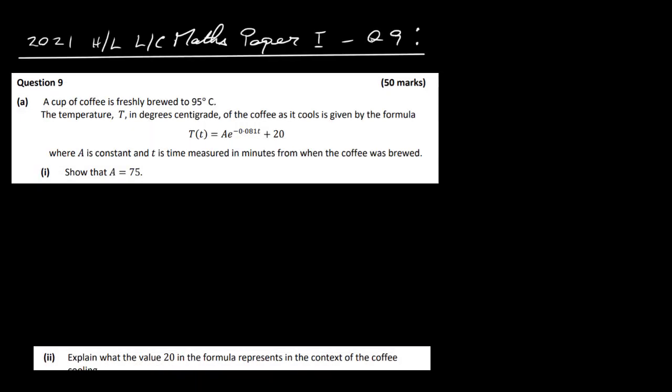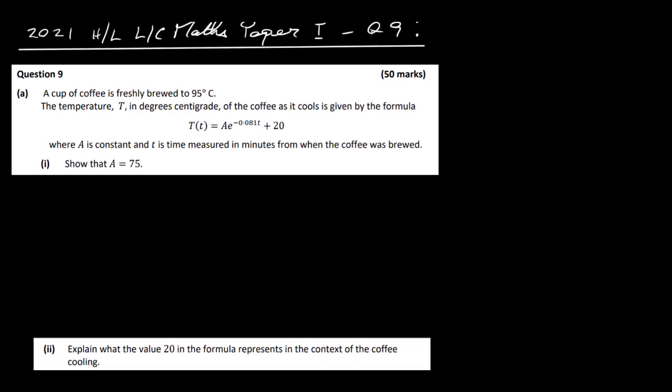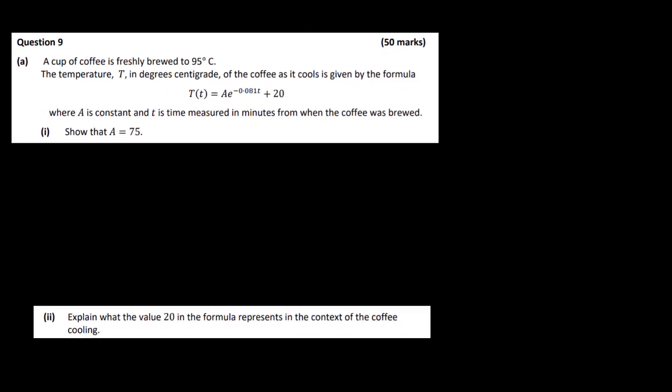This is the 2021 Higher Level Leaving Certificate paper one, question nine. In part A, we have a cup of coffee freshly brewed to 95 degrees Celsius. The temperature T in degrees centigrade of the coffee as it cools is given by the formula T(t) = A times e to the power of minus 0.081 times t plus 20, where A is a constant and t is time measured in minutes from when the coffee was brewed.